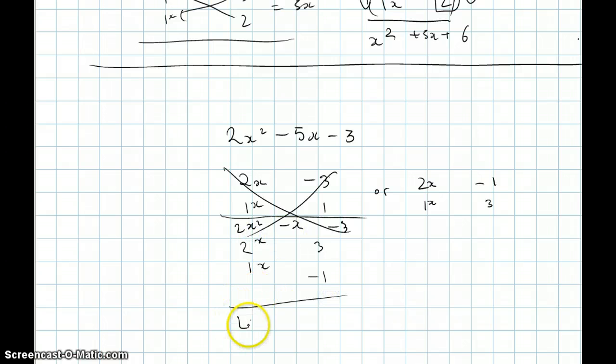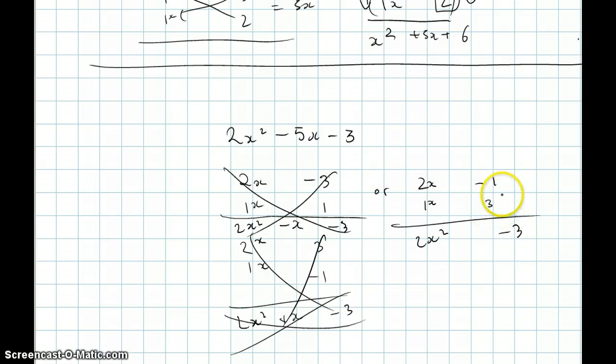The next one, 2x squared, same thing, guys, minus 3. 2x times minus 1 is minus 2x plus 3x is x. This is also wrong. 2x squared minus 3. This is 6x minus x, which is plus 5x. We're getting close.